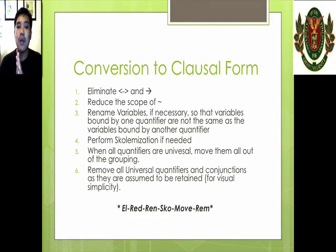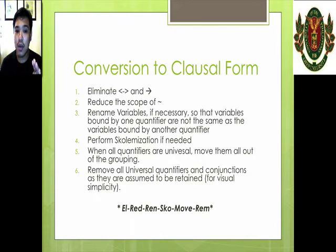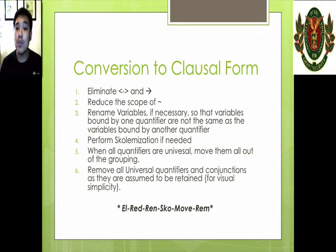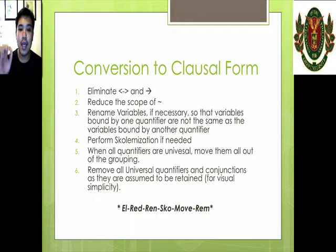After that, we remove all universal quantifiers. By this time there will be no existential quantifier anymore, so we just need to remove all universal quantifiers and conjunctions. We have to separate all conjunctions like we usually do in propositional logic, as they are assumed to be retained anyway. This will be for visual simplicity. I have an acronym for this so that I don't forget: ELREDREN SCOMOVREM.